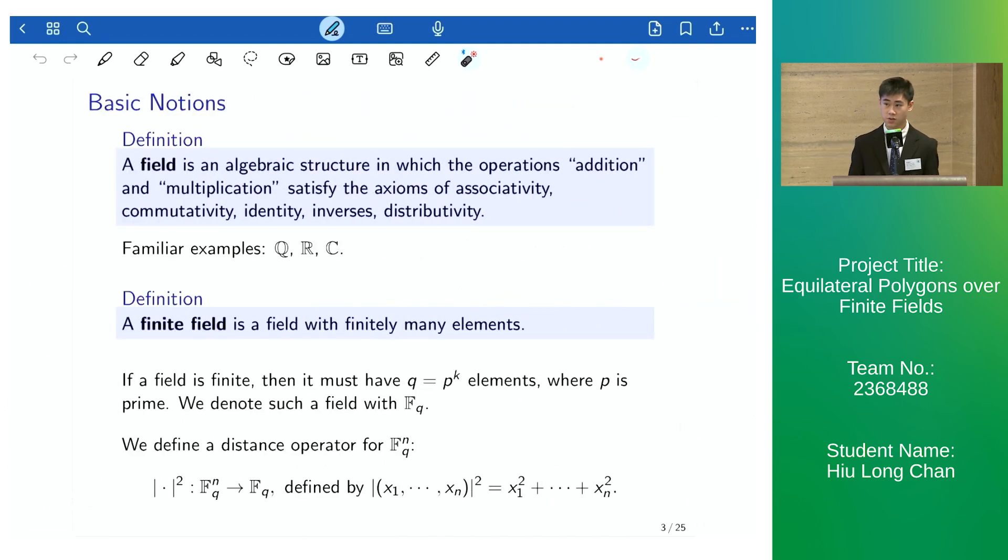A field is an algebraic structure in which the operations addition and multiplication satisfy the axioms of associativity, identity, inverses, and distributivity. The familiar examples include the rational numbers, the real numbers, and the complex numbers. A finite field is a field with finitely many elements, and it always has a prime power order p, and we denote such a field with F_q.